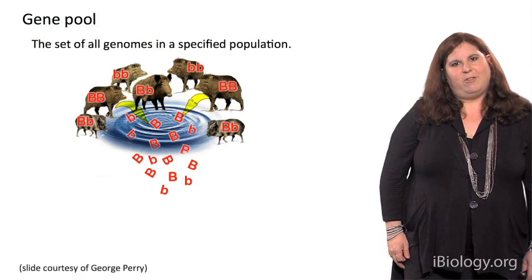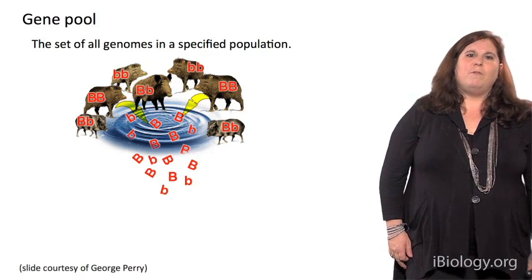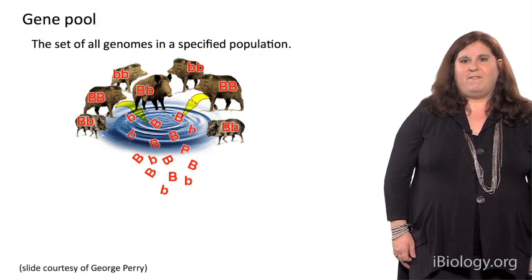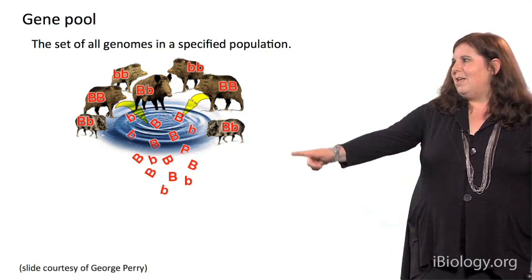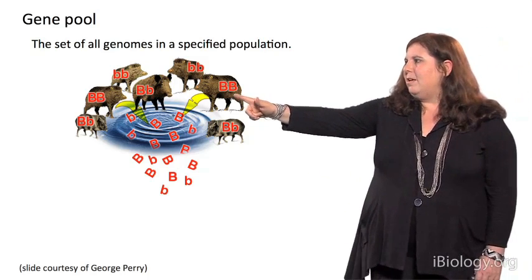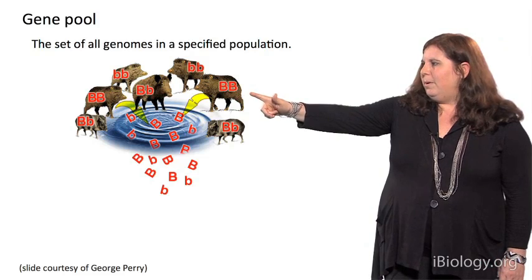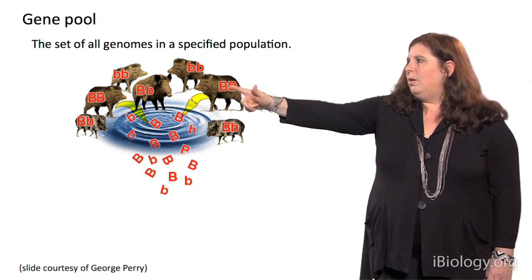Let's first introduce some terminology. The gene pool refers to the set of all genomes in a specified population. And here we have an example from a population of warthogs. Here we have at a single genetic locus two alleles, big B or little b.